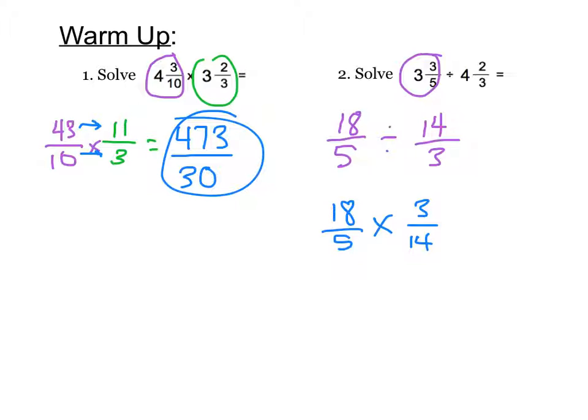I always like to simplify and I notice that 18 and 14 I can divide both by 2. 18 divided by 2 is 9, 14 divided by 2 is 7. Now that everything is simplified I am going to multiply straight across. 9 times 3 is 27 over 5 times 7 is 35. So our answer is 27 thirty-fifths.